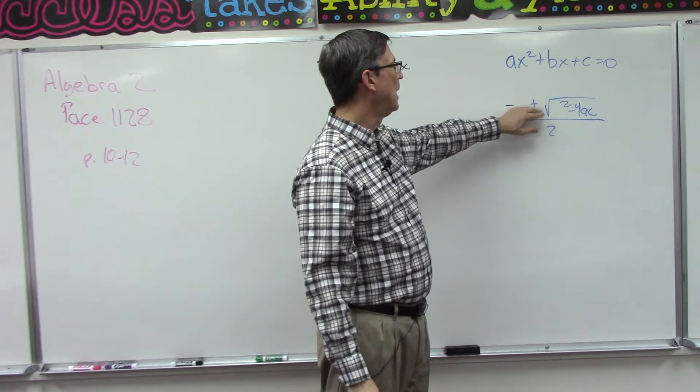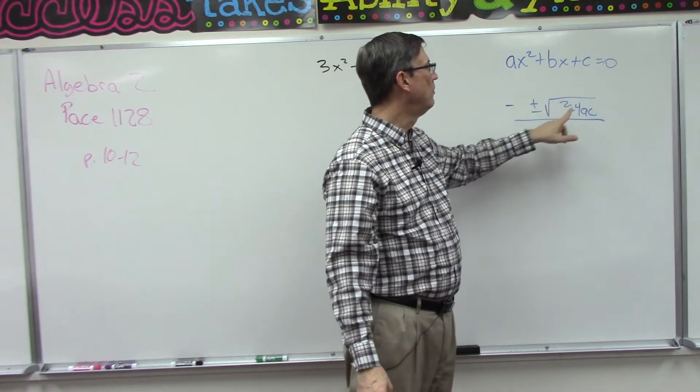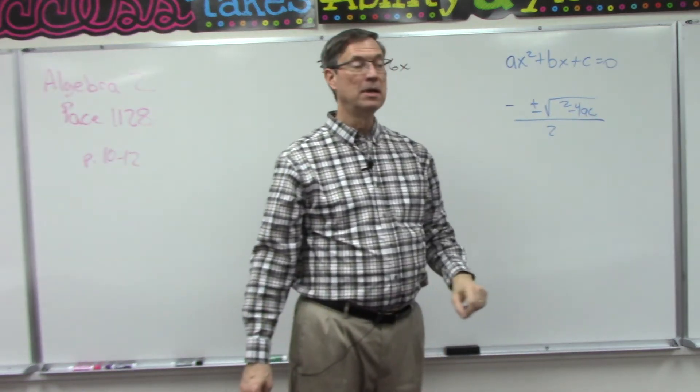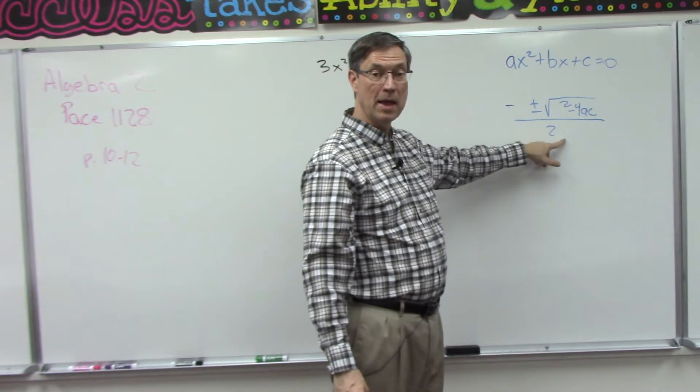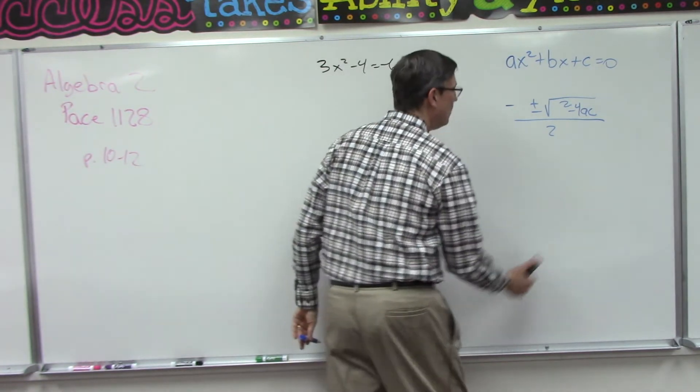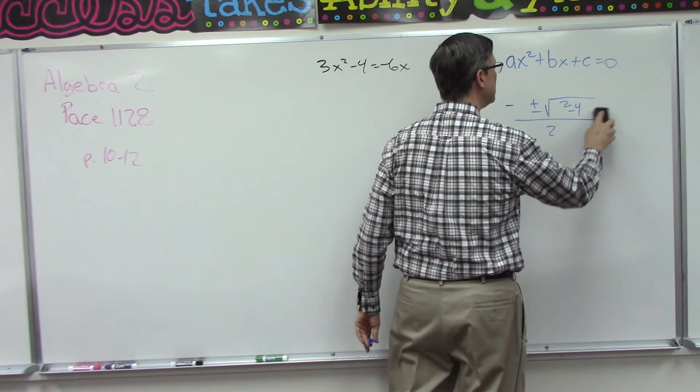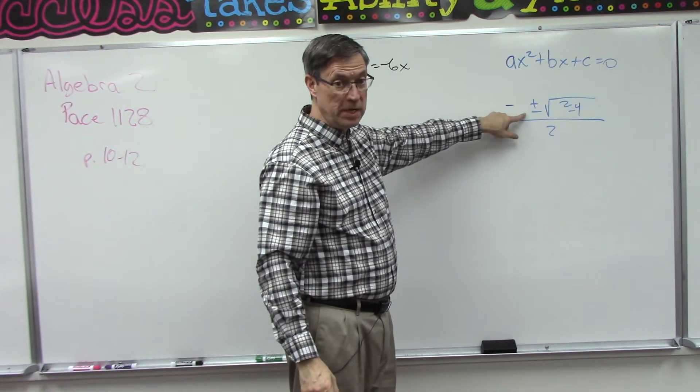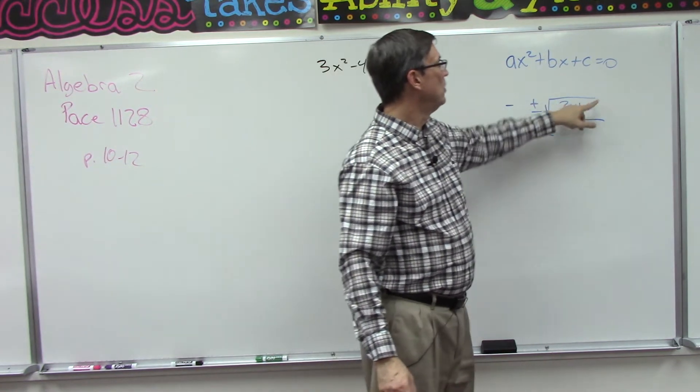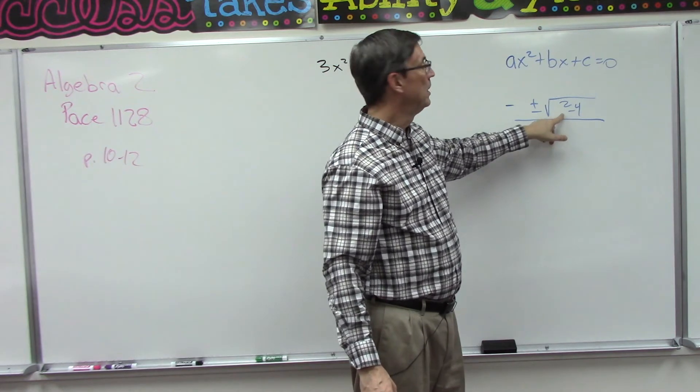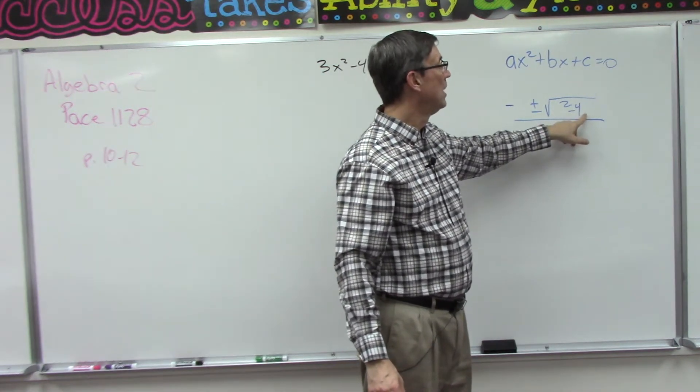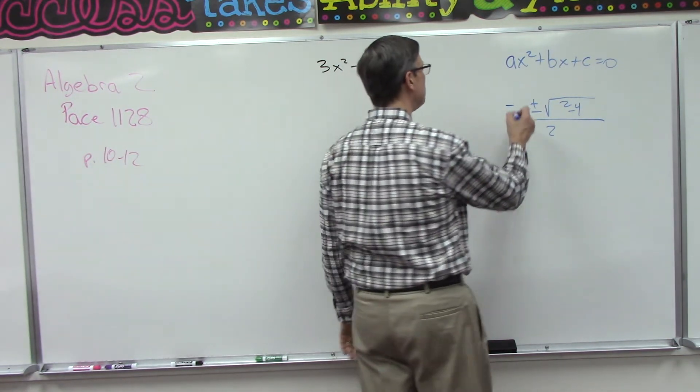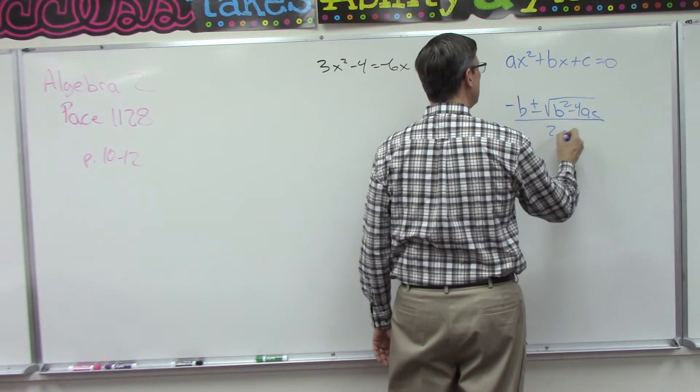Negative b plus or minus the square root of b squared minus 4ac all over 2a. Let's do just a little bit more. What if I erase the a and the c? Say it with me. Say it out loud. Negative b plus or minus the square root of b squared minus 4ac all over 2a. All right, I'll just plug it back in here so you can see it so that we can solve using it.